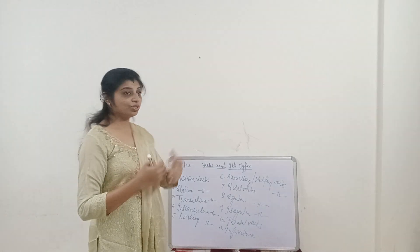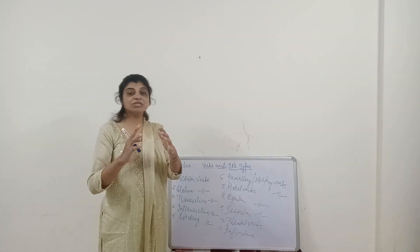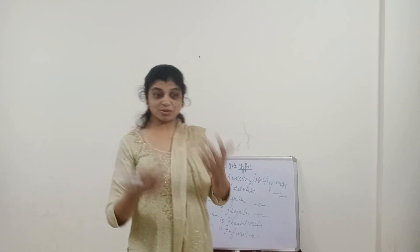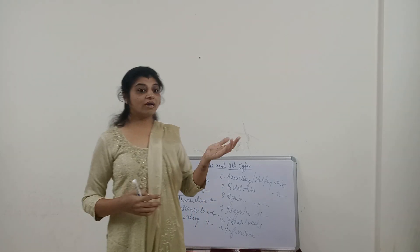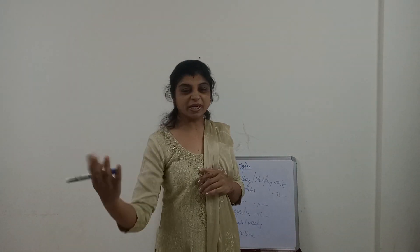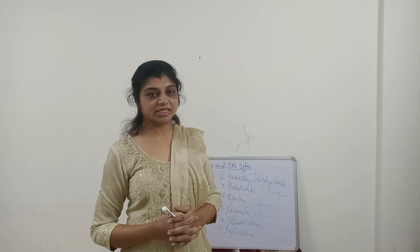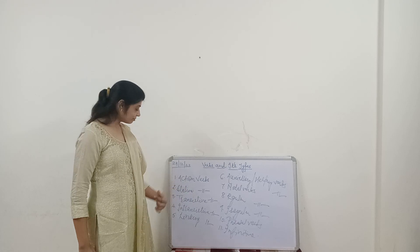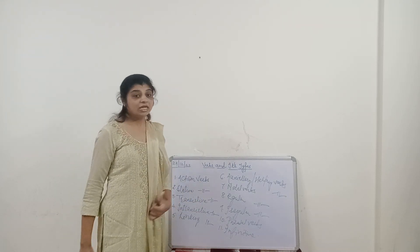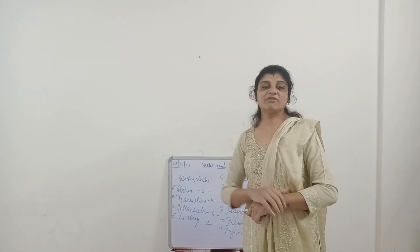What are action verbs? The name itself indicates — verbs which show actions, like jump, run, walk. Those are action verbs. Stative verbs mean you state a condition of either quality or emotion — for example, love, want. When you want something or resemble something, you are expressing that; that comes under stative verbs. Transitive verbs are always accompanied with a direct object.